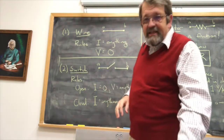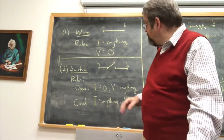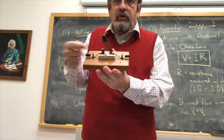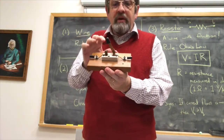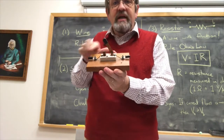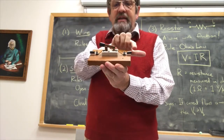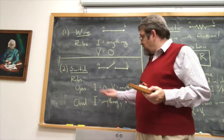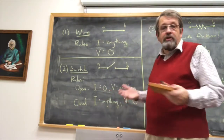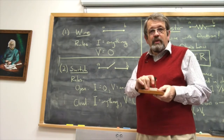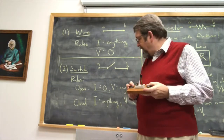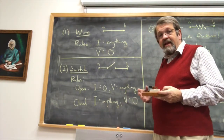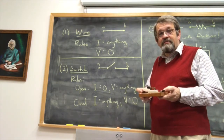Our second device is a switch, which has two states. When open, there's no conducting path from one side to the other, so the current is zero and the potential difference can be anything. When closed, it becomes a wire: current can be anything and the potential difference between the two sides is zero.